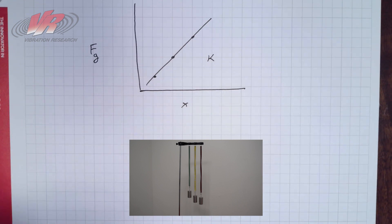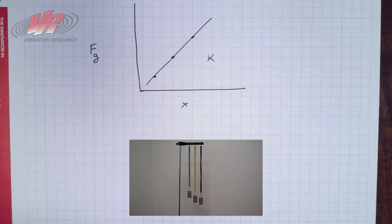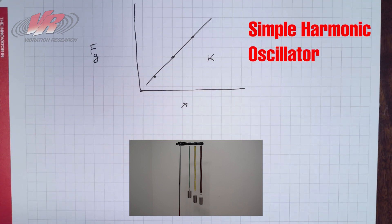Any object that will vibrate due to this mass is called a simple harmonic oscillator.